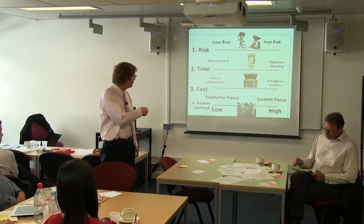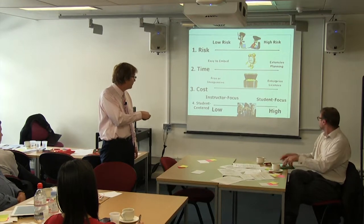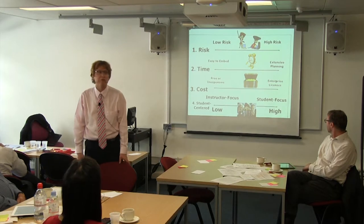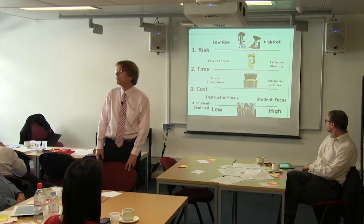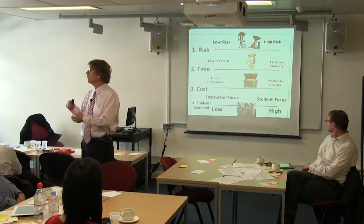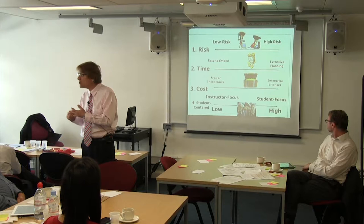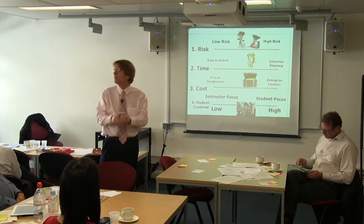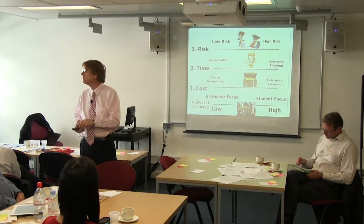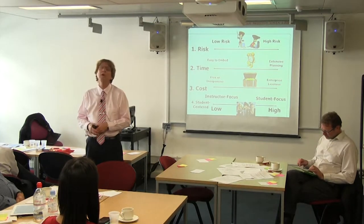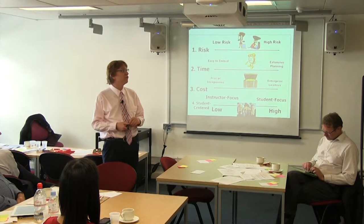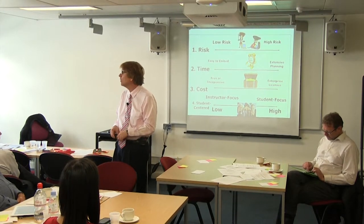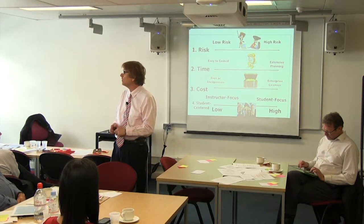We include low risk, high risk, low time, high time, low cost, high cost, and whether it's student-centered or instructor-centered. We list objectives, description, and variations. Because there's at least one variation for each activity, it actually has 200 or more activities in the book. Between the two books there are more than 400 ideas you can do in teaching online.